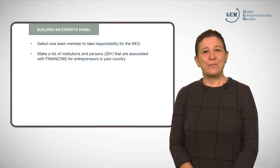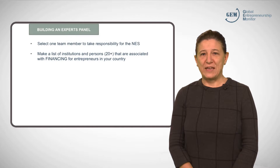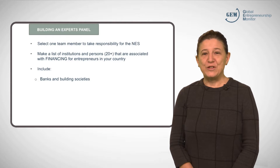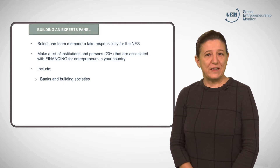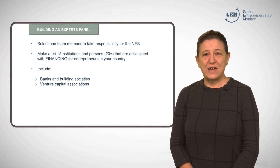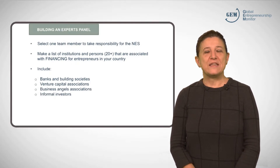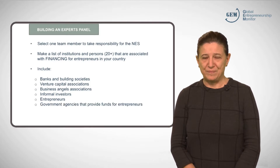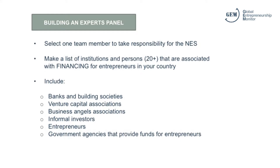Then, to start building your panel of experts, you should make a long list of institutions and persons — 20 or more — that are associated with financing for entrepreneurs in your country. The list should include banks and building societies, venture capital associations, business angels associations, informal investors, entrepreneurs, and public agencies that offer funds for entrepreneurs. Any person, firm or institution with a connection to the financing of start-ups can be included in this list.